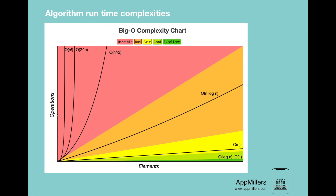On the graph, the x-axis shows elements (the input numbers) and the y-axis shows operations. The best-practice time complexities appear at the bottom of the graph. Linear time complexity O(n) is shown in green and rated as good. In the excellent region we have constant time complexity, which shows that the time needed to perform operations does not depend on the number of input elements — as inputs increase, the time needed does not change. Constant time complexity is the best case for an algorithm.